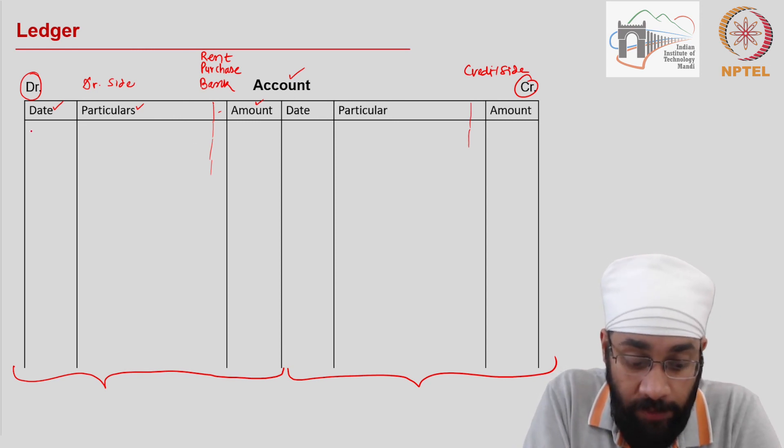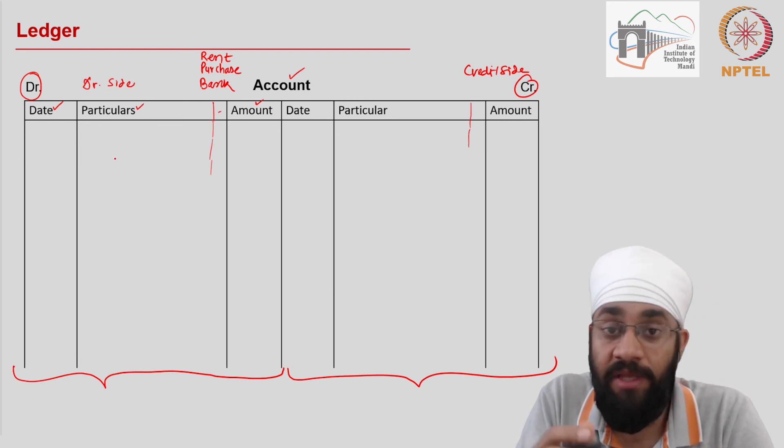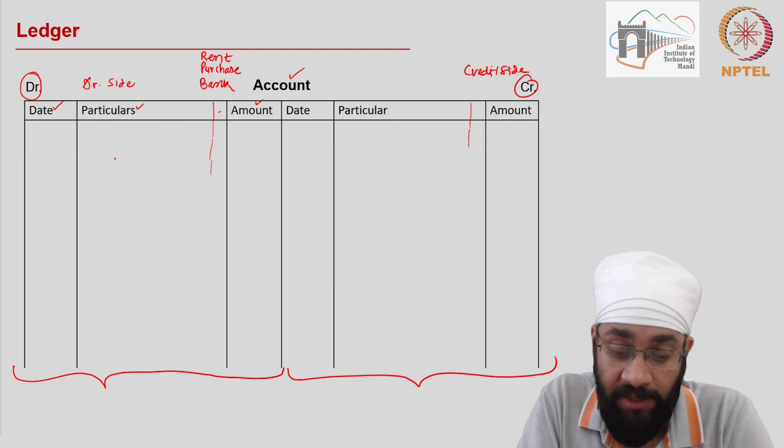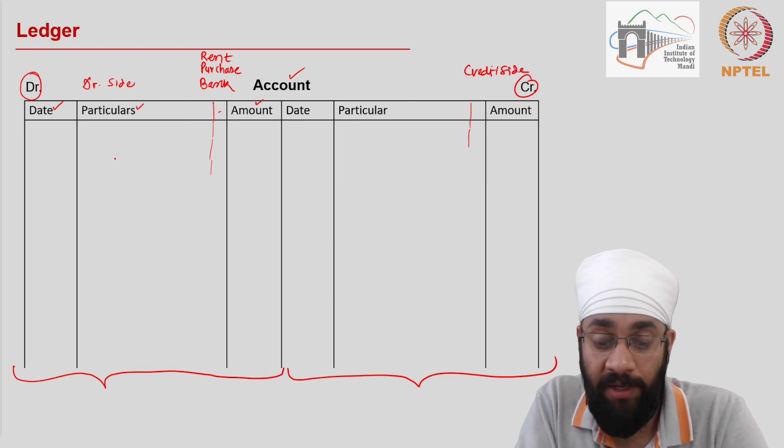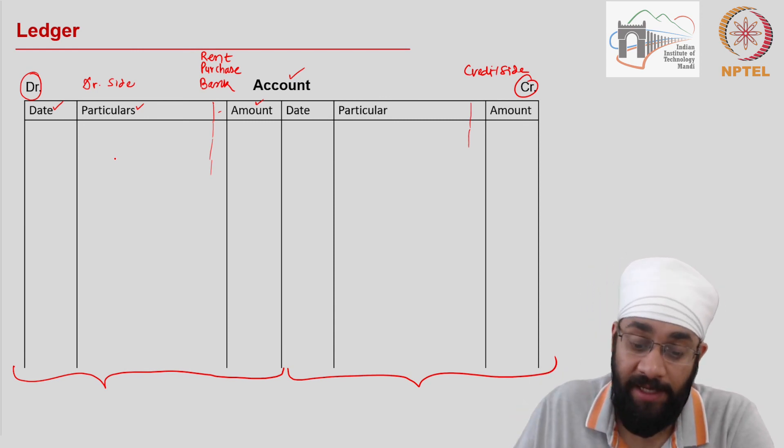So you have three columns, same three columns on both sides, and you're going to write the journal entries in this passbook. This ledger account is going to be maintained for every item of asset, liability, income, and expense.